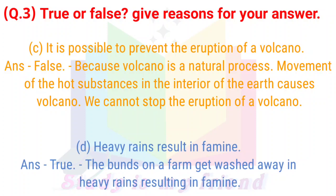D) Heavy rains result in famine. Answer: True. The crops on a farm get washed away in heavy rains, resulting in famine.